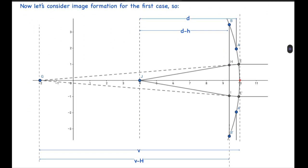This is how the two images will be formed. Now let's look at the calculations involved in the formation of Image 1. I assume that after the first refraction, the image will form at point G, which is at a distance V from the pole of the lens. Its distance from the lower surface of the lens will be V minus H. And as given in the question, the final image forms at depth small d from the surface of the water, so its distance from the lower surface of the lens will be D minus H.